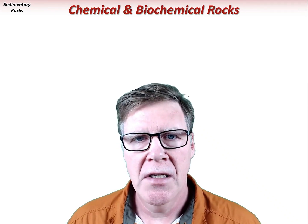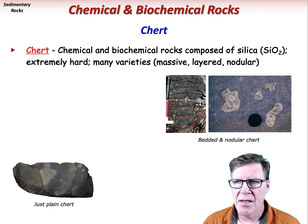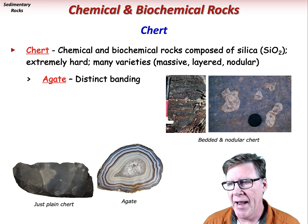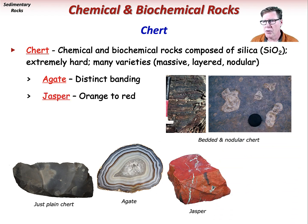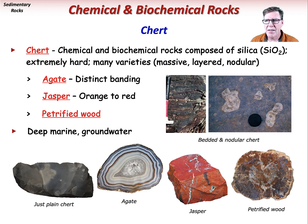Chemical and biochemical rocks composed largely of silica, or SiO₂, are called chert. Chert is extremely hard and does not react with dilute hydrochloric acid. It is a fine-grained rock that may be massive, layered, or even nodular. Different varieties include agate, which is distinctly banded, orange to red jasper, petrified wood, etc. Chert typically forms either from groundwater action or in a deep marine environment.